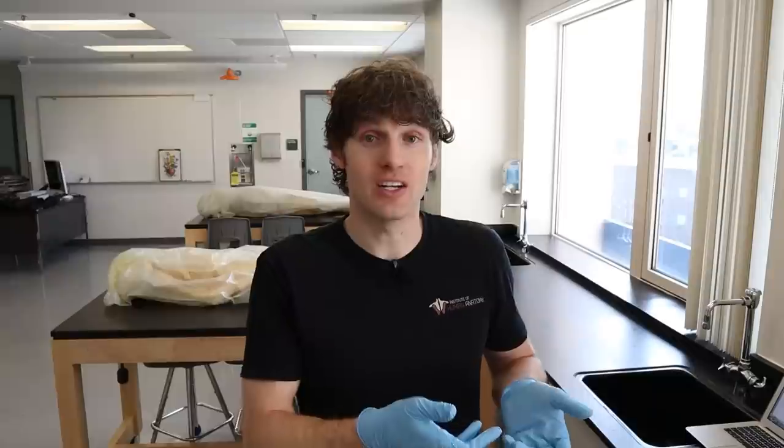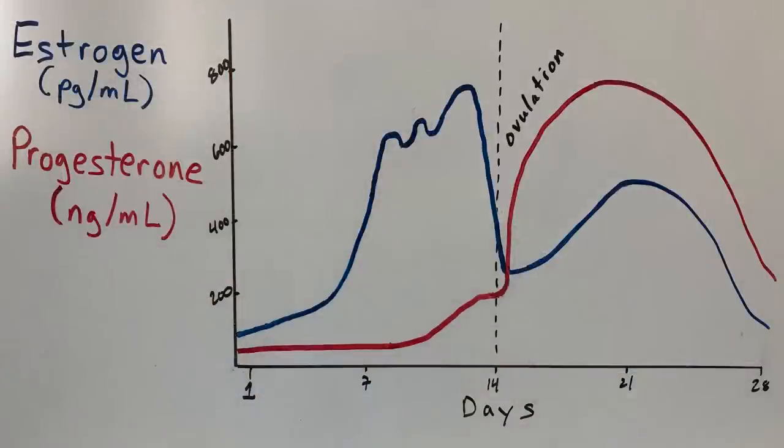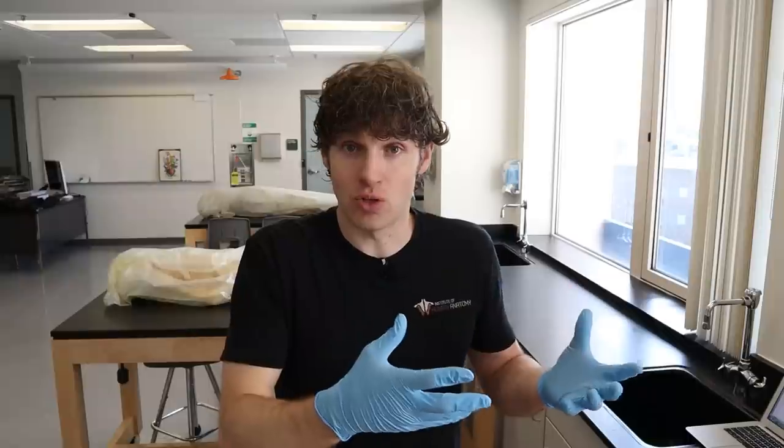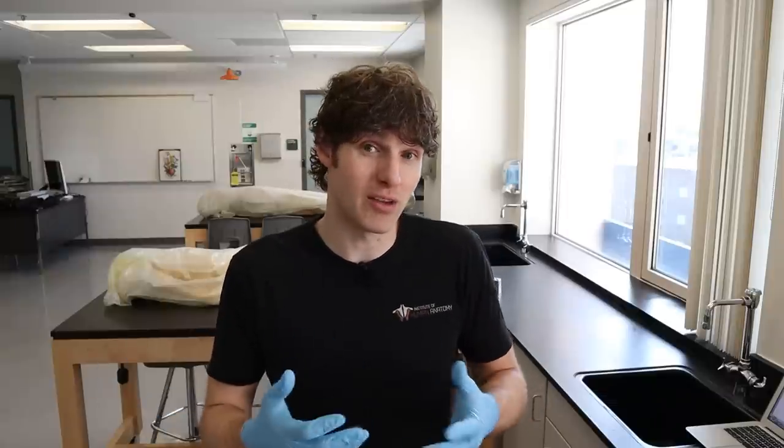If the egg does not get fertilized, the corpus luteum — which secreted progesterone and estrogen — only has about a two-week lifespan. As that wanes, progesterone and estrogen levels dip down dramatically toward day 28, signaling to the body that we're ready to try again. The pituitary gland responds with another cycle of LH and FSH, a period starts, and the cycle restarts. Those dips in progesterone and estrogen are essentially blamed for PMS symptoms and mood swings, since hormones are powerful things that can affect mood and behavior.